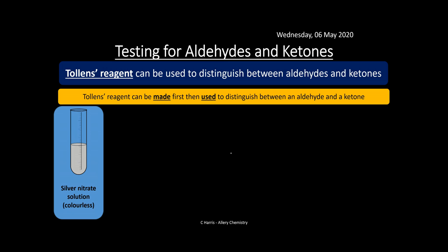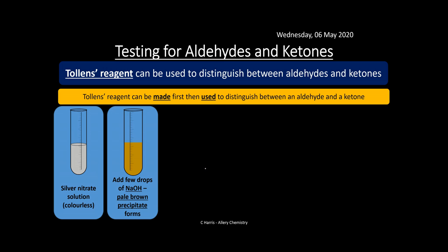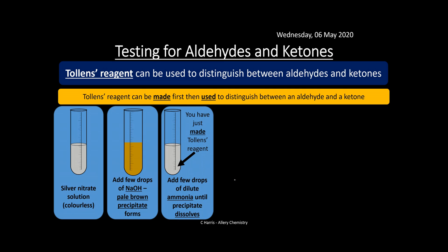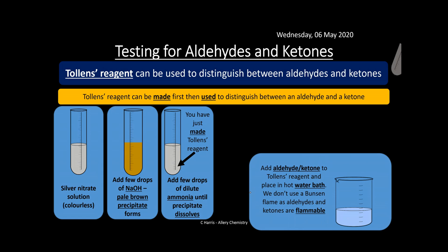To make Tollens' reagent: first, pour silver nitrate solution, which is colourless, into a test tube. Then add a few drops of sodium hydroxide — a pale brown precipitate forms. Next, add a few drops of dilute ammonia until that precipitate dissolves. What you've made in your test tube is now Tollens' reagent. Then add your aldehyde or ketone to the Tollens' reagent and place it in a hot water bath.